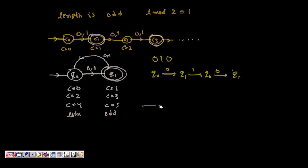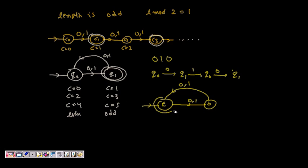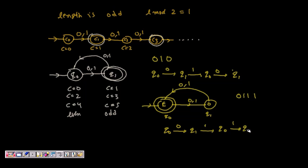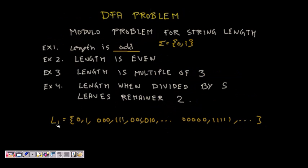Similarly, if instead we want even-length strings, then Q0 is the even state and Q1 is the odd state. Getting a 0 or 1 transitions from even to odd and back. If we want even-length strings to be accepted, we make Q0 the acceptance state. For example, the string 0,1,1,1 — from Q0 see 0 go to Q1, see 1 go to Q0, see 1 go to Q1, see 1 go to Q0 — that's even length, so it is accepted.